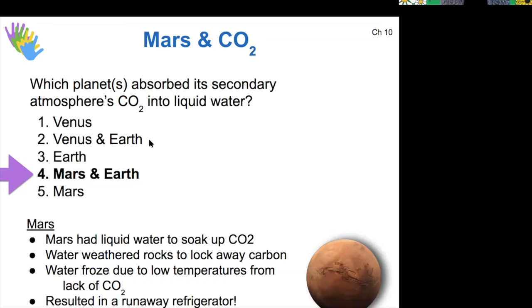All right, so now the CO2 on Mars essentially circulates through its atmospheric system as part of its seasonal changes, right, adding and subtracting from the north polar cap.